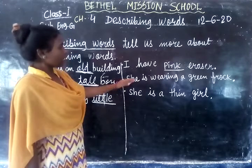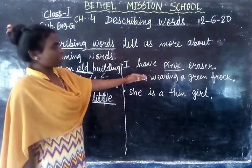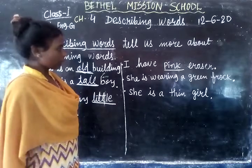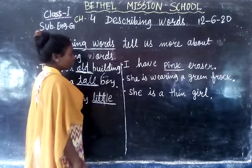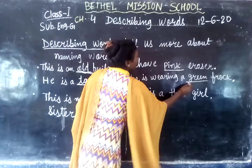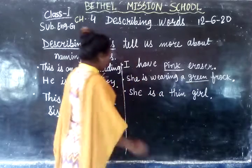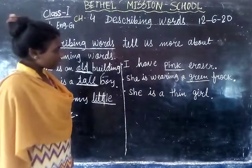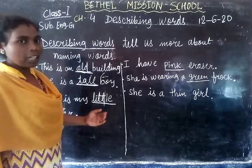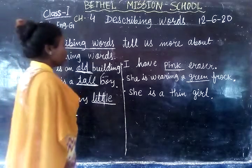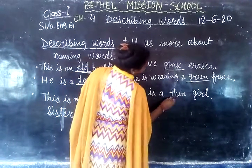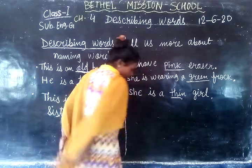Next is: she is wearing a green frock. So, the describing word is 'green'. Next: she is a good girl. Girl is good. In this, the describing word is 'green'.